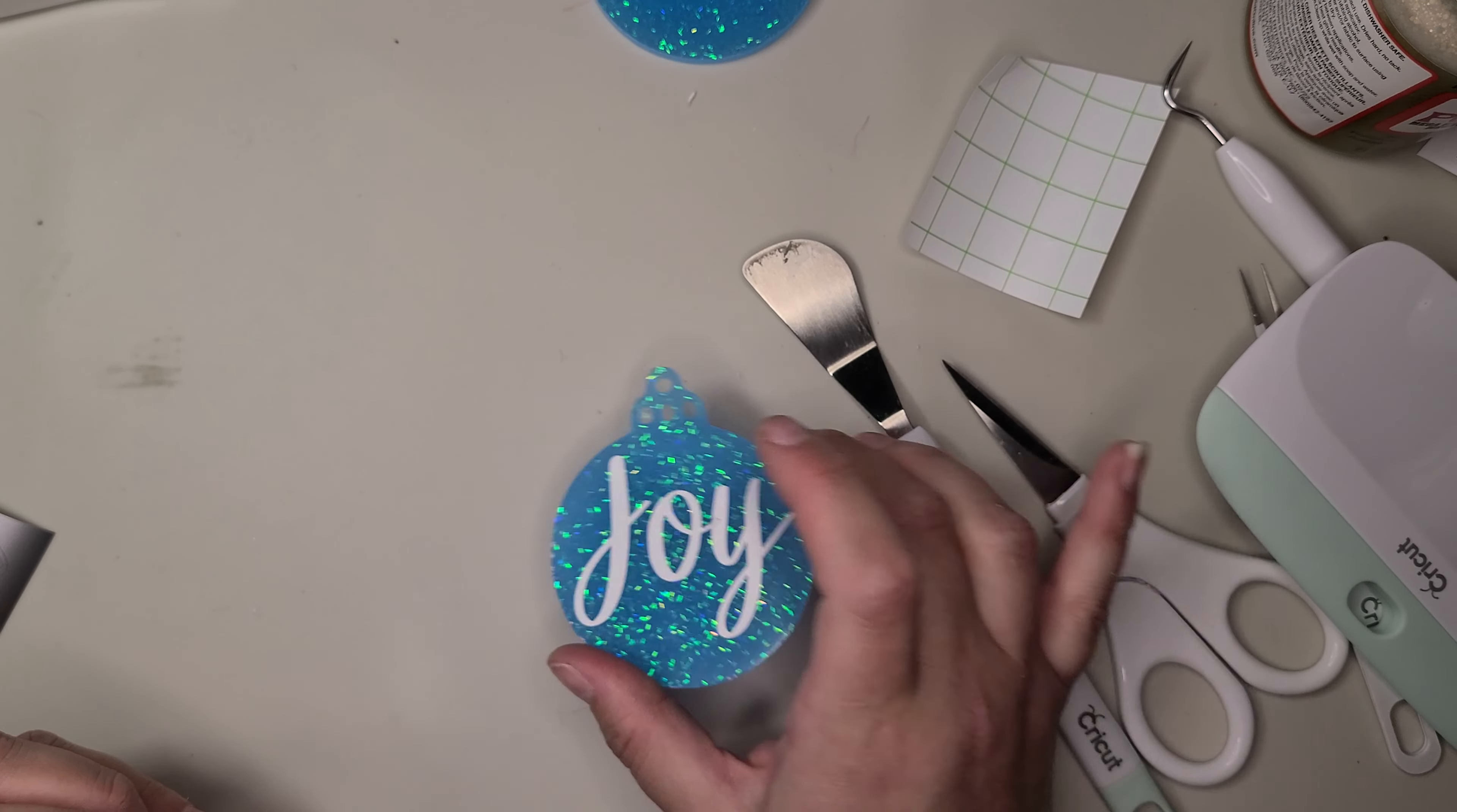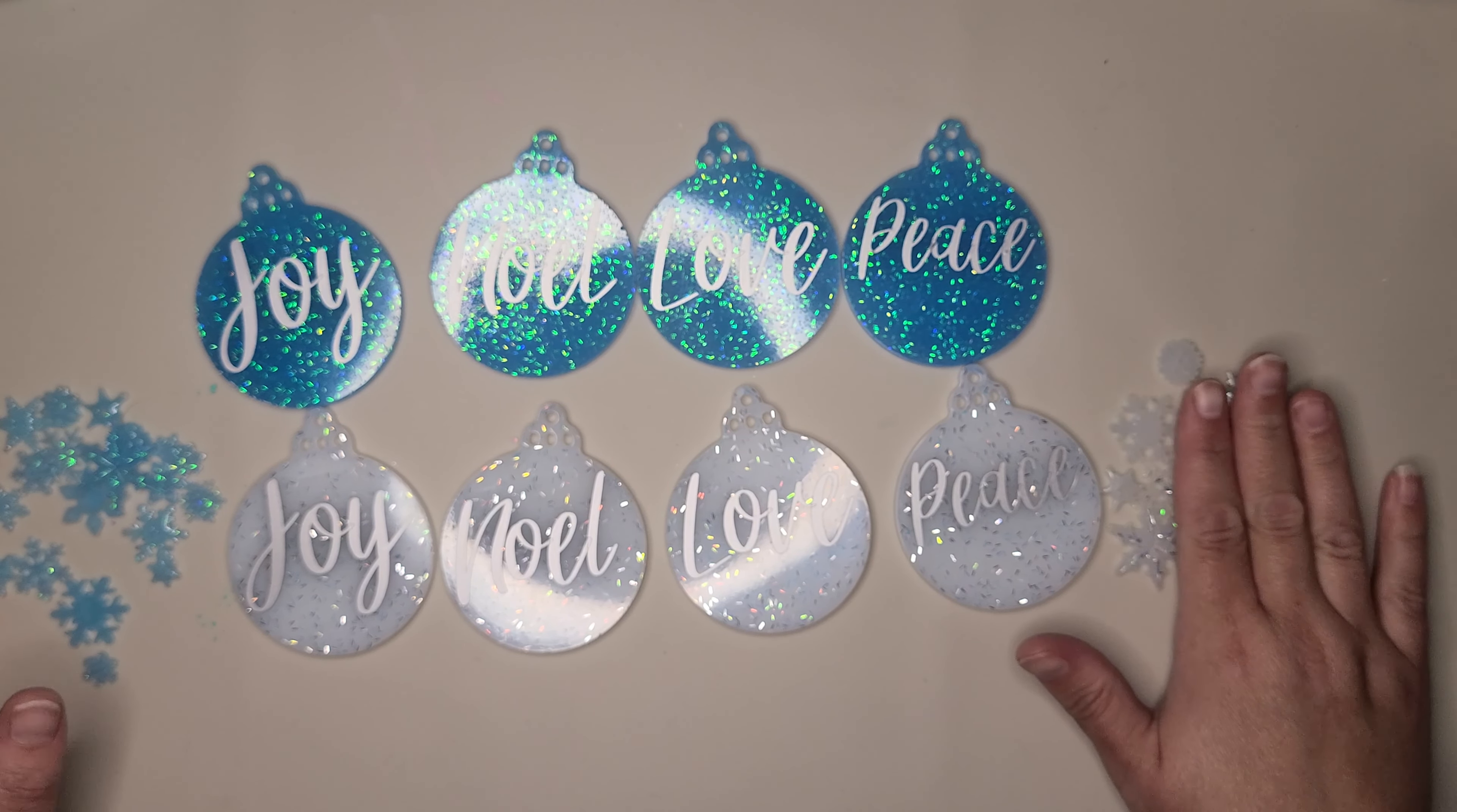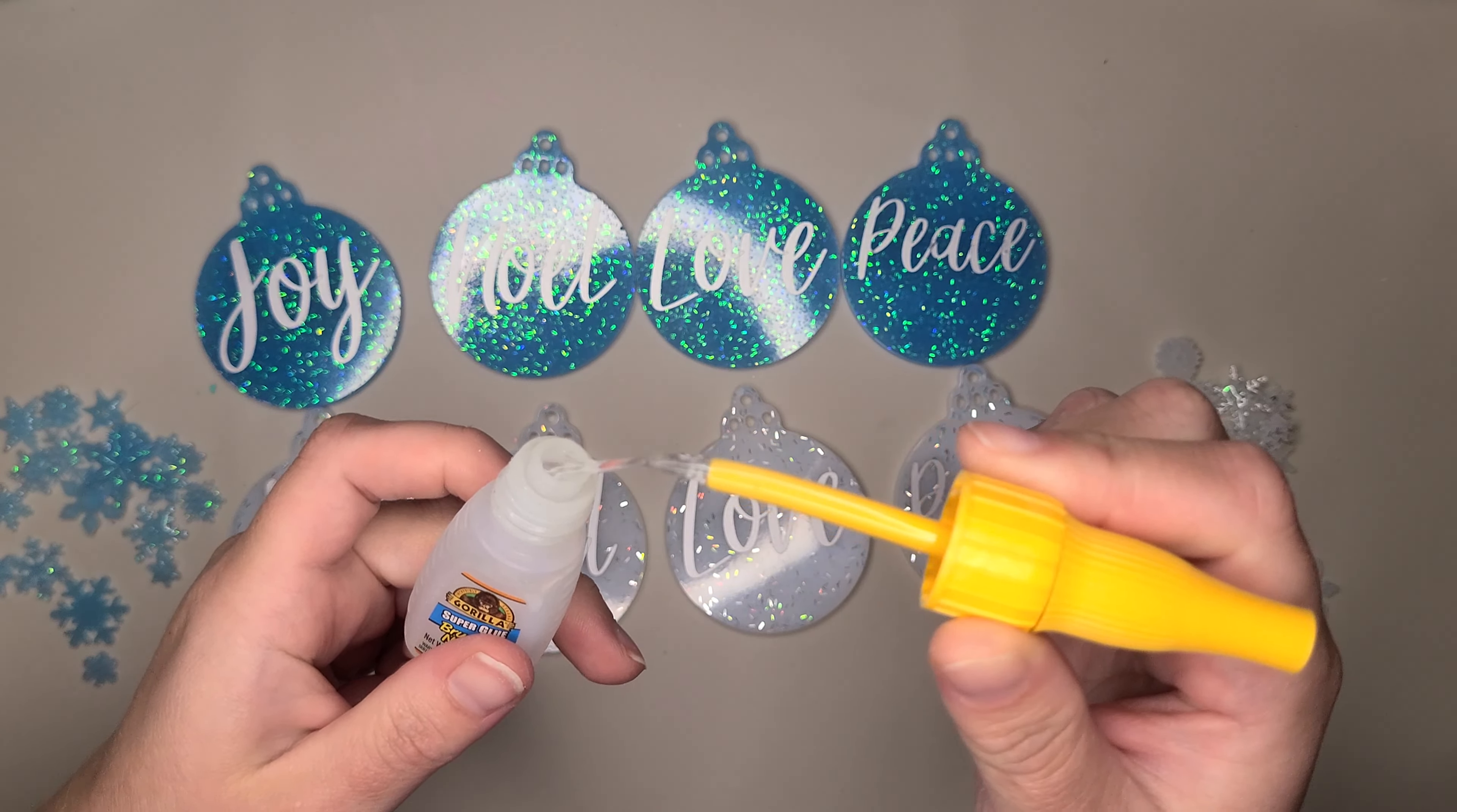Alright, so I got all the labels on both of my sets here, and then I have my little snowflake charms. I have my white over here and my blue over here. Let me grab my glue. Alright, so I got my glue here. It looks like it's straight out. Oh man. Alright, so that's a no-go. Let me find another glue.